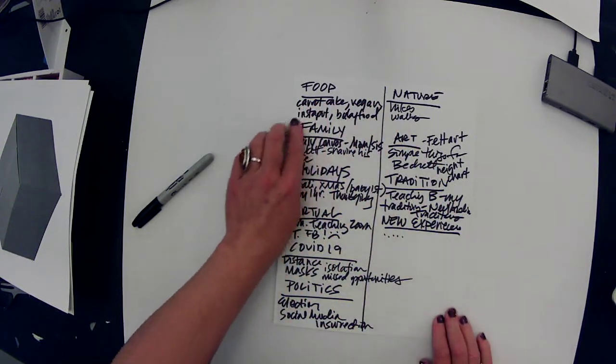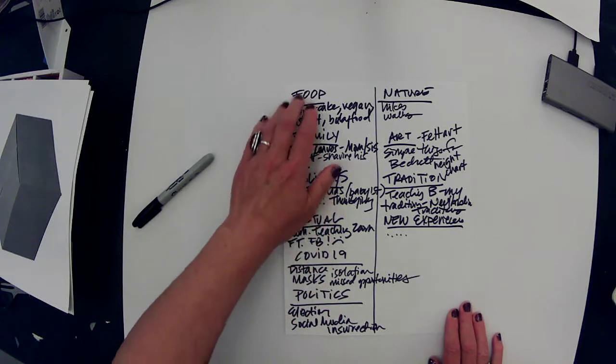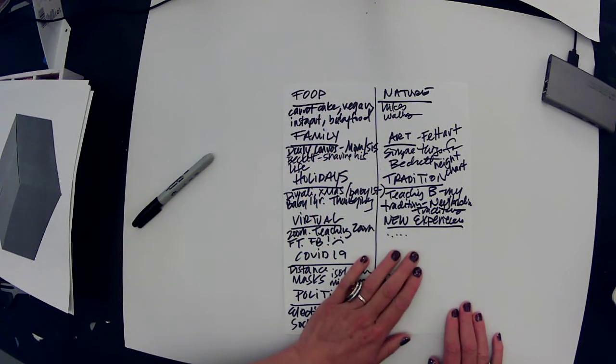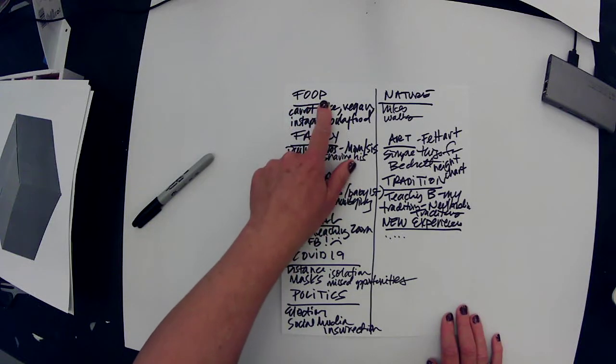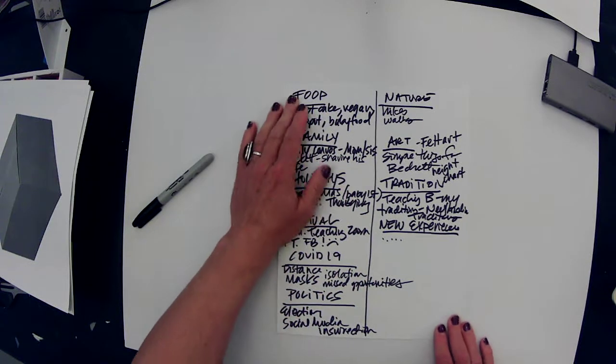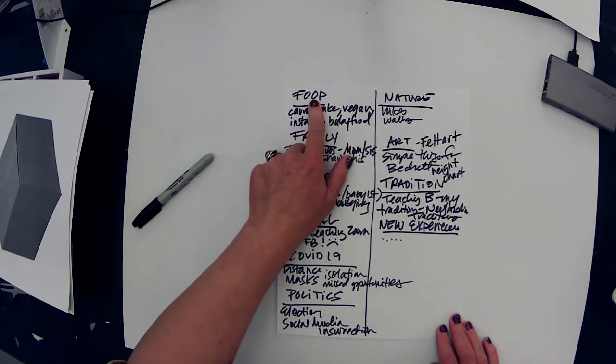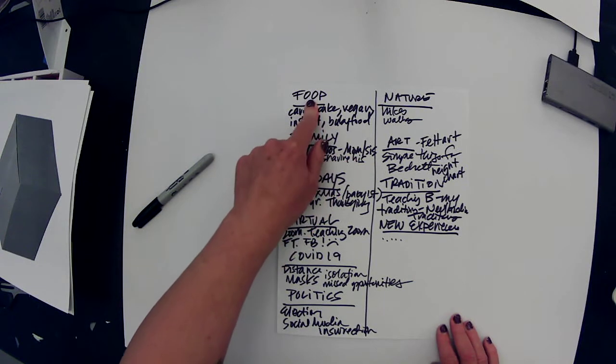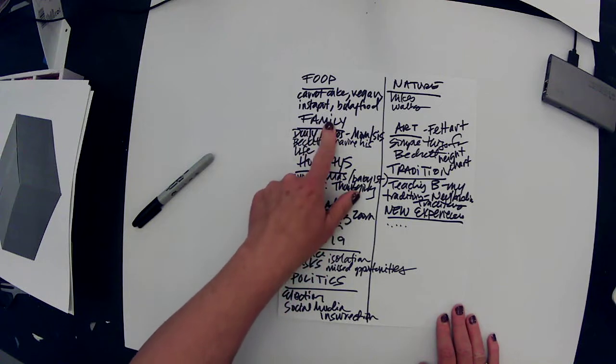I took this year, I thought about it, and I divided this year up into categories that I thought were important. It's funny to me that I put food at the top here, it's not the most important one but I did put it at the top. Food, you know, we're home a lot, right? Cooking has become really an art form for a lot of people this year.